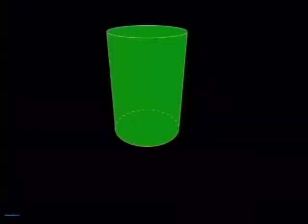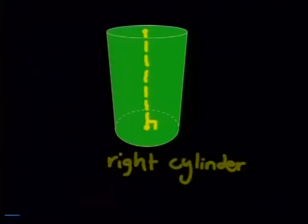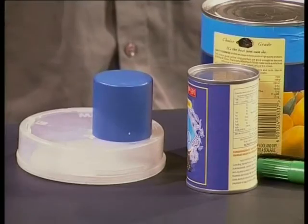There are two kinds of cylinders: right cylinders and oblique cylinders. If you drop a straight line through the middle of the cylinder — that is, from the middle of one base to the middle of the other base — and it meets the bases at right angles, then the cylinder is a right cylinder. Otherwise, it is an oblique cylinder. We're only going to be working with right cylinders in this lesson.